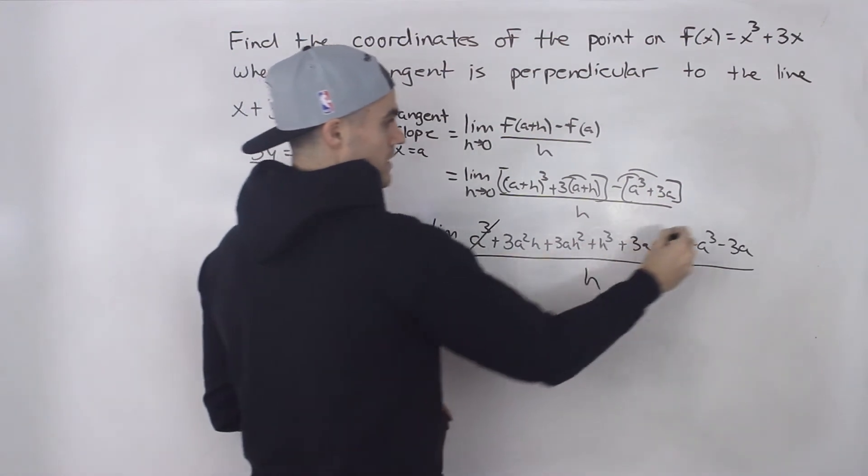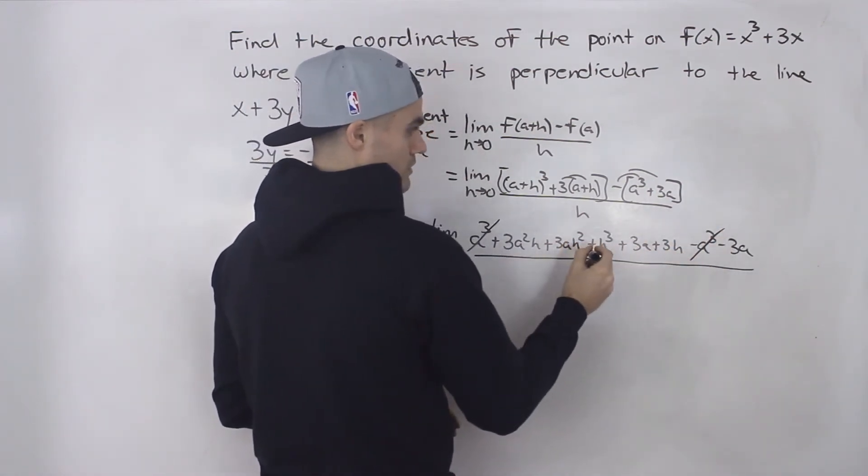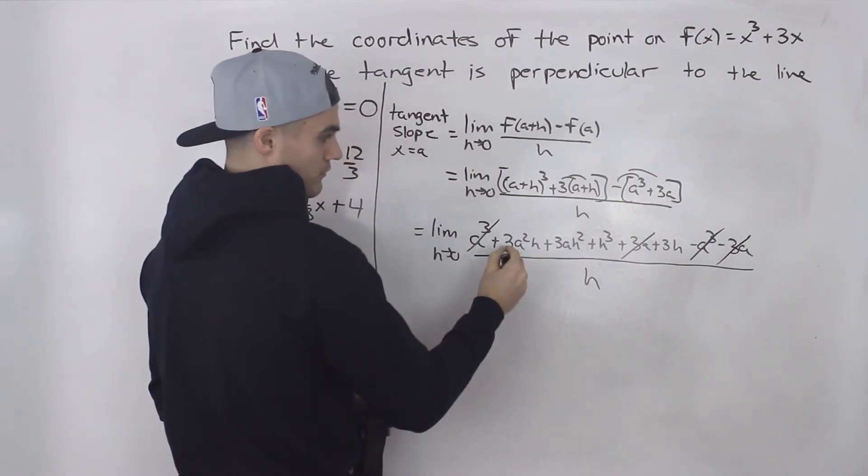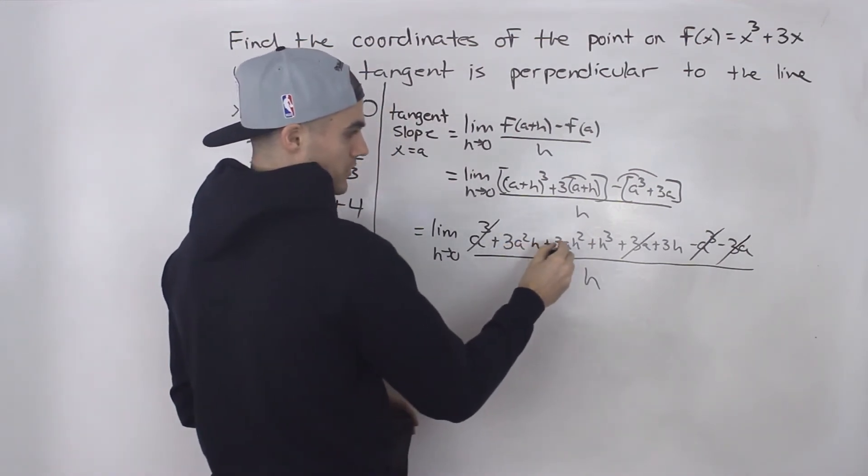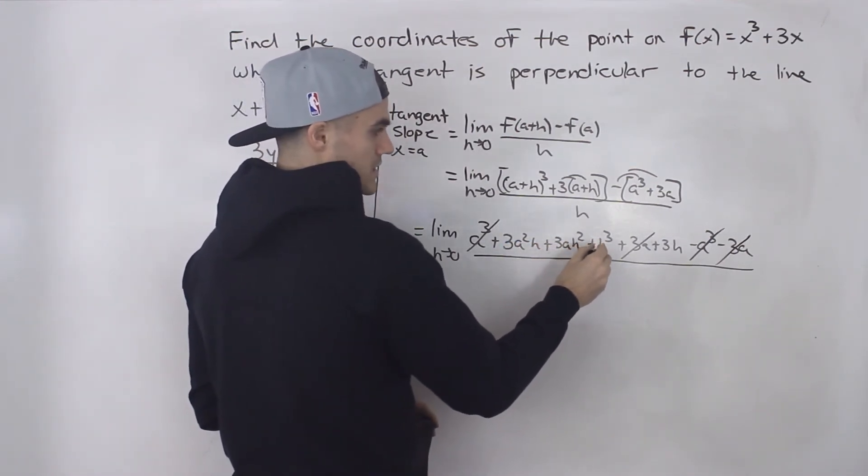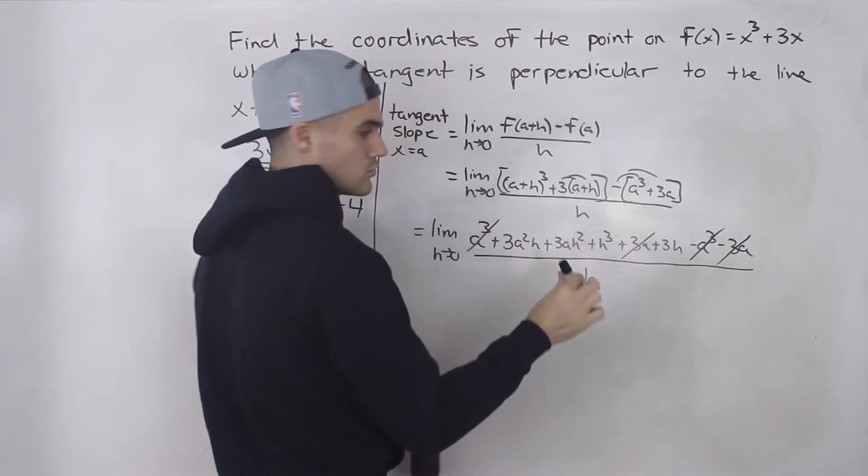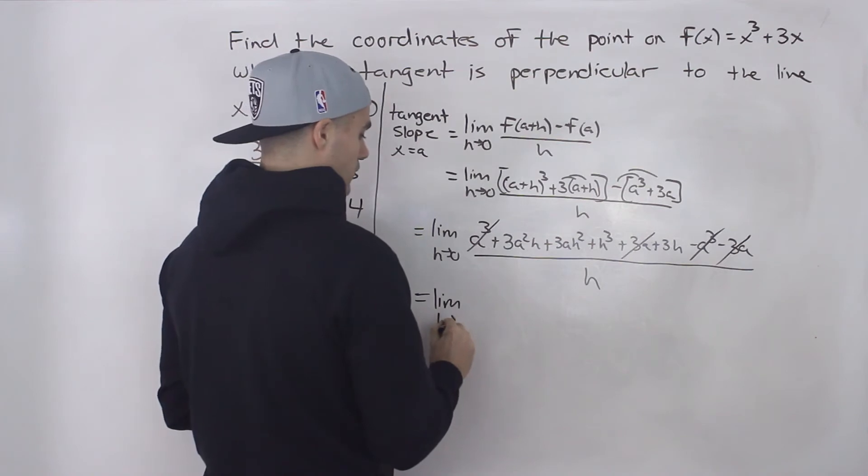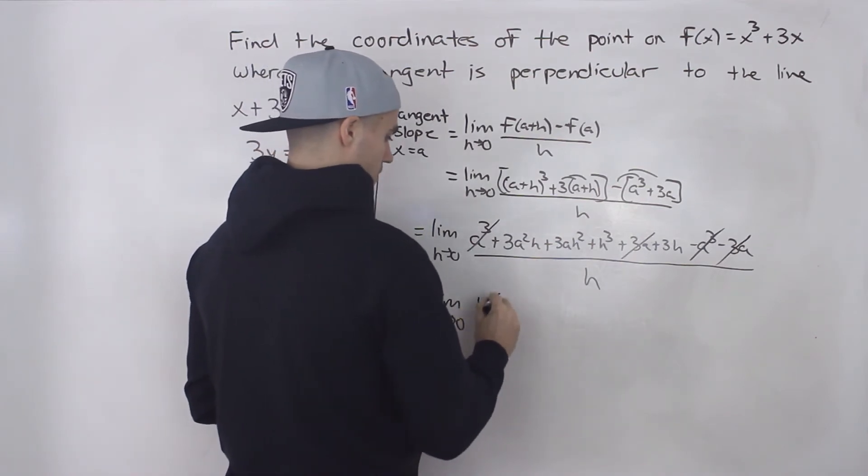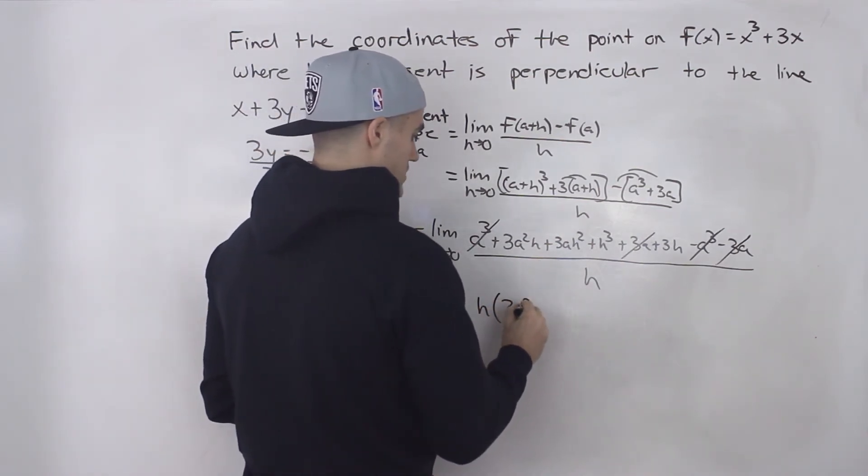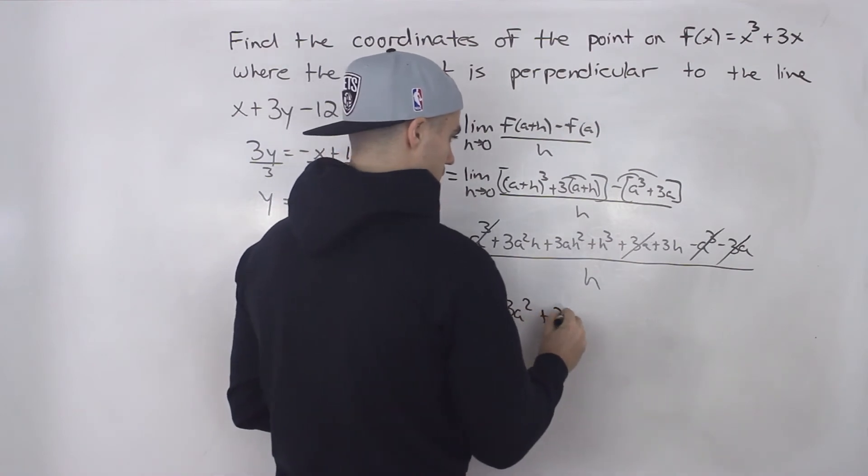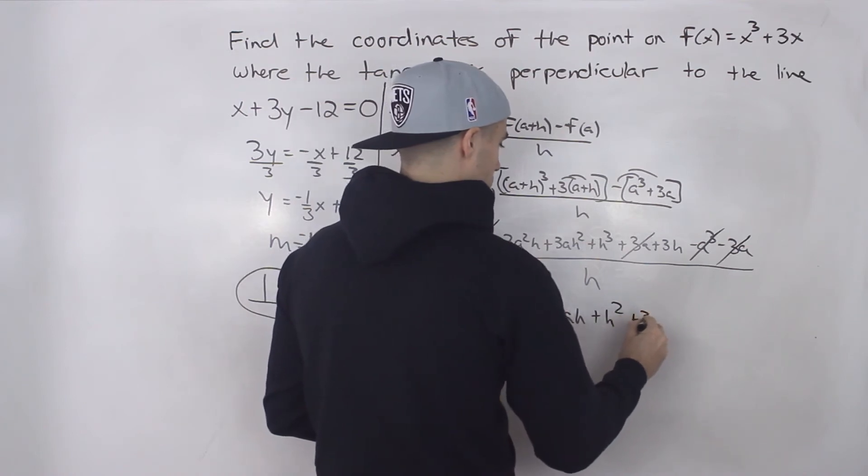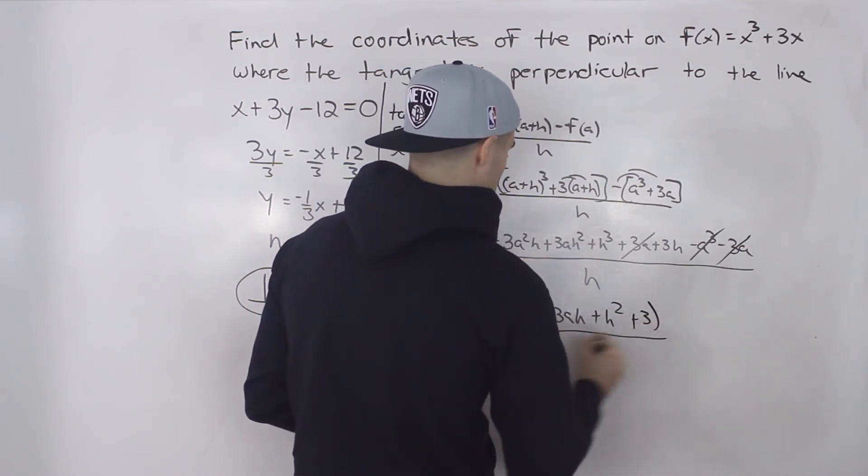Notice a bunch of things will cancel out, a cubes cancel out, and then the 3a's cancel out as well. So we're left with 3a²h + 3ah² + h³ + 3h in the numerator. Notice that we can factor out an h from all of those terms. So we'll be left with 3a² + 3ah + h² + 3. This is going to be all over h.